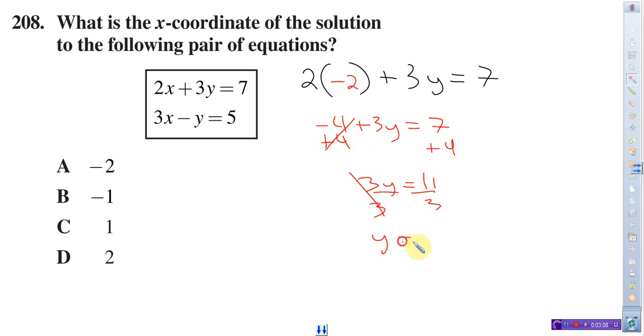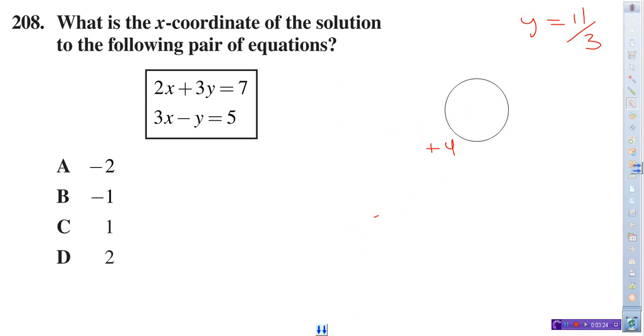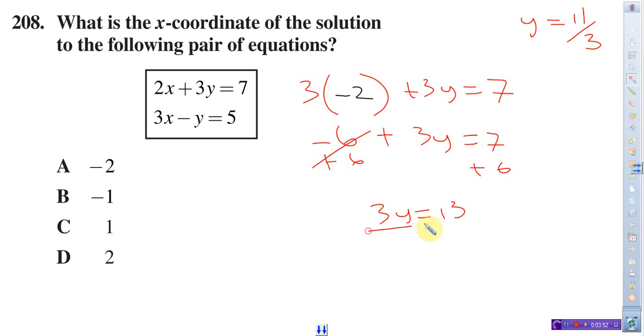And then I would add 4 to each side. This would cancel, you get 3y equals 11, divide both sides by 3. Y equals 11 over 3. Now let's go ahead and put this off to the side for now, so that's what we said y equals. Next thing you want to do is go ahead and plug it into the second equation. So 3 times x—in this case x we're gonna say x is negative 2 again—3 times negative 2 is negative 6 minus y equals 5. I add 6 to both sides. This cancels, you get negative y equals 13, divide both sides by negative 1, and you would get y equals 13 over 3.